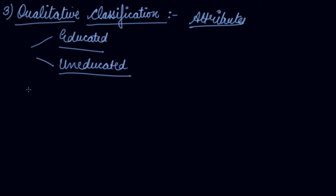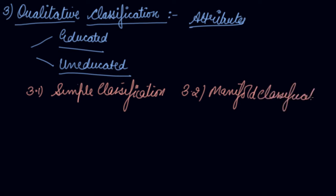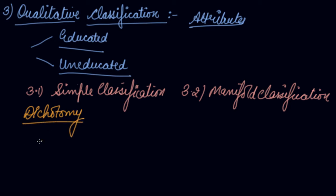Qualitative classification is further divided into two parts: simple classification and manifold classification. In simple classification, you classify your data into a dichotomy, meaning only two attributes — for example, healthy and unhealthy, educated and uneducated, or male and female.